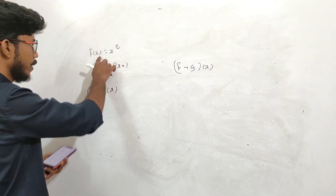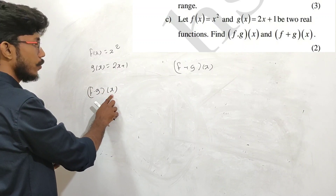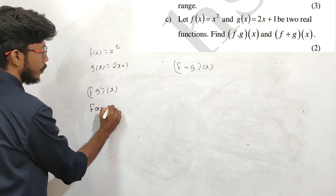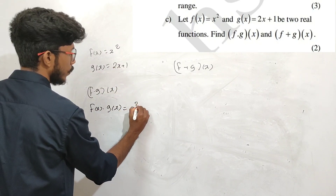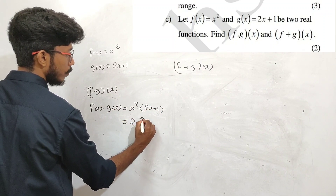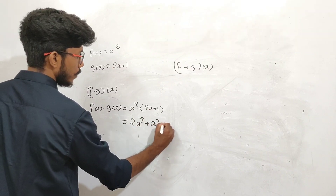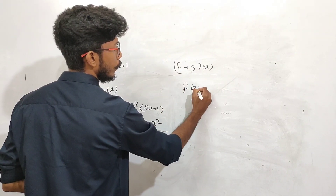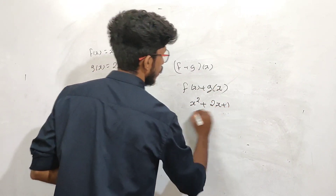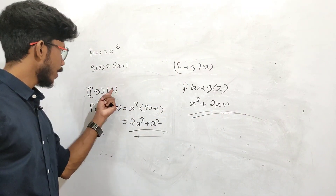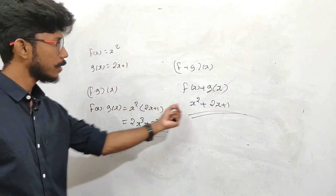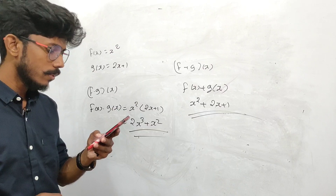Similarly, given f of x and g of x, find f plus g of x and f into g of x. f of x equals x square, g of x equals 2x plus 1. f into g of x equals x square into 2x, giving 2x cube. f plus g of x equals x square plus 2x plus 1.